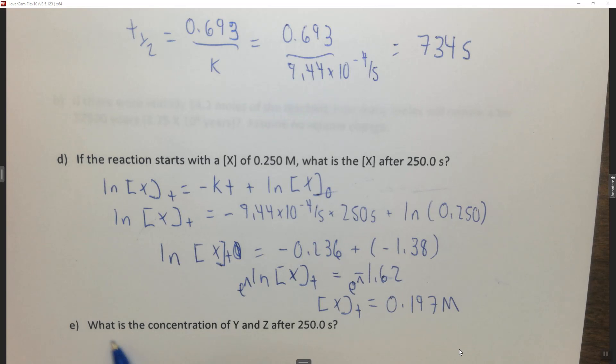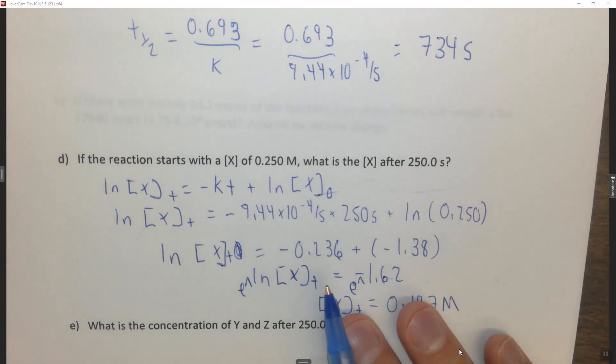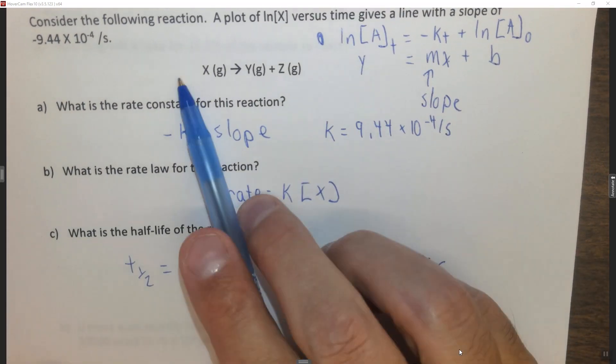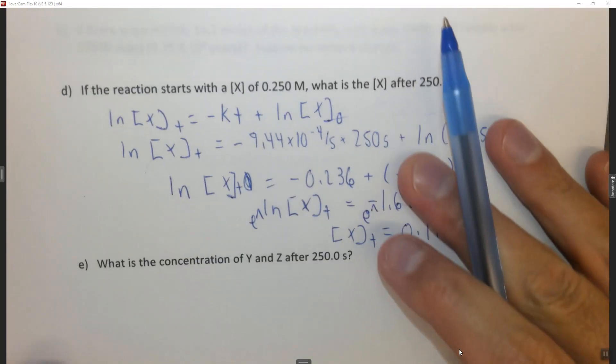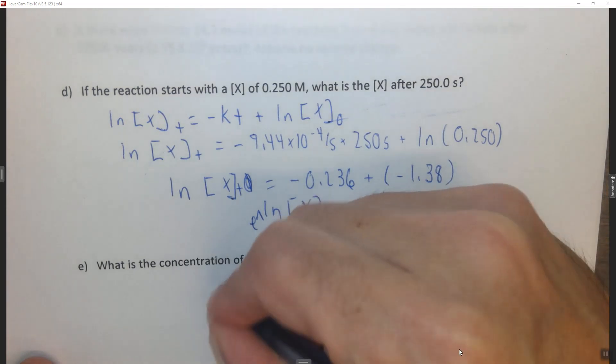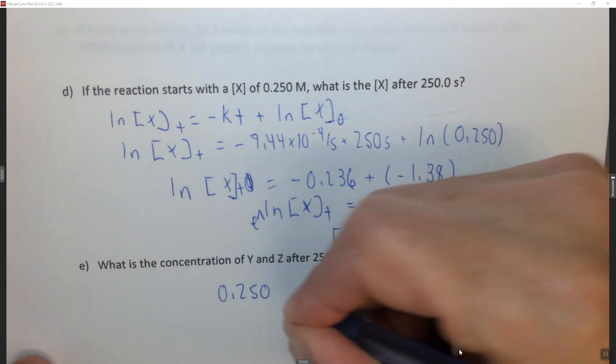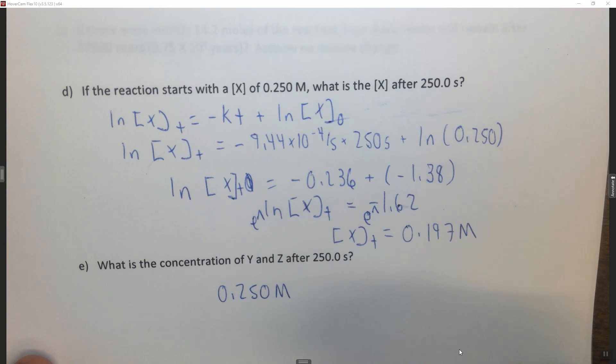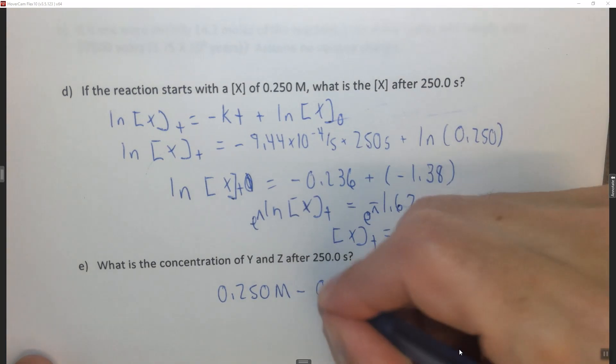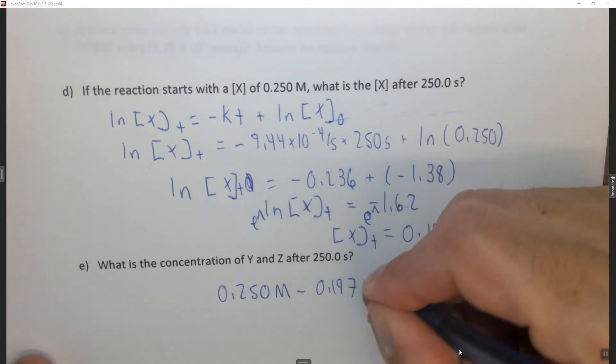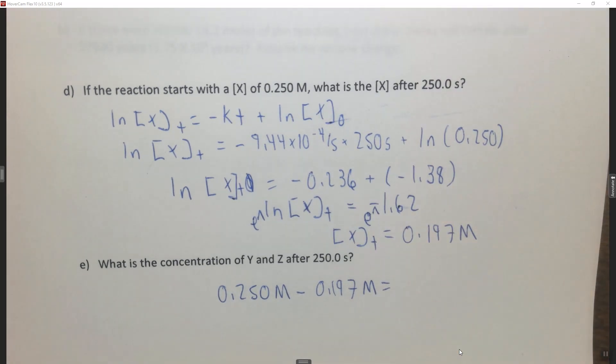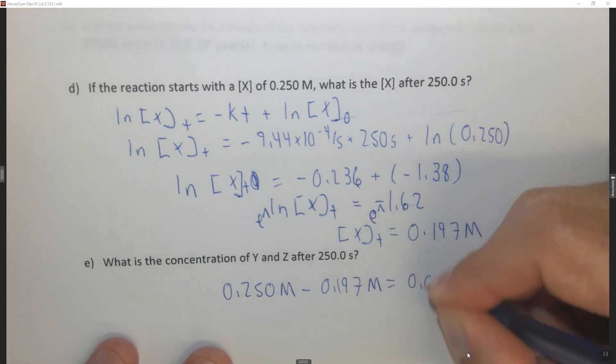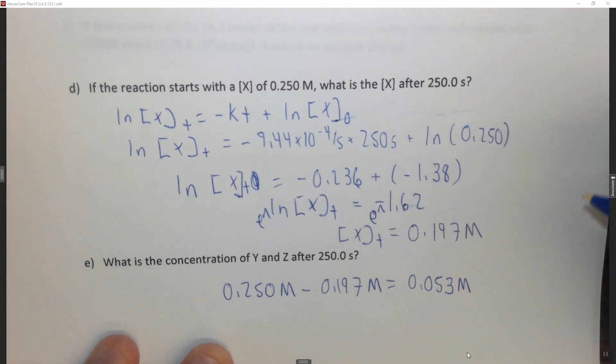The next question says, what is the concentration of y and z after 250 seconds? So note that 1x forms 1y and 1z. So because you get one of them, one of each of them, we have the initial concentration 0.250 molar, that's what we started with, and we now only have 0.197 molar left.